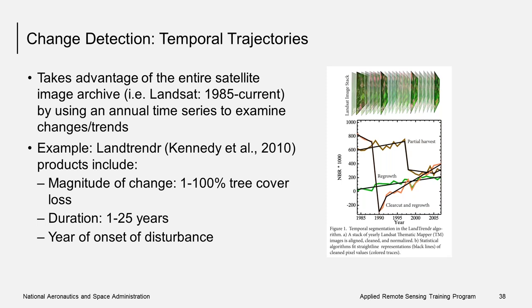Recent developments in change detection methods take advantage of the entire freely available Landsat archive by using monthly or annual time series to look at changes or trends. While previously you would use only two image dates, in this method you could use 20 or 30 image dates. This method allows the capture of short-duration disturbance events as well as long-term disturbance trends. This approach recognizes that change is not simply a comparison between conditions at two points in time, but rather a continual process operating at both fast and slow rates on landscapes. One example is LandTrendr, developed by Robert Kennedy et al. at Oregon State University, whose results include the magnitude of change identifying percent of tree cover loss, the duration of the disturbance, and the year of onset of the disturbance.